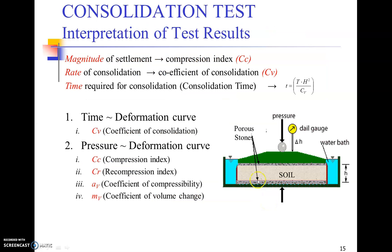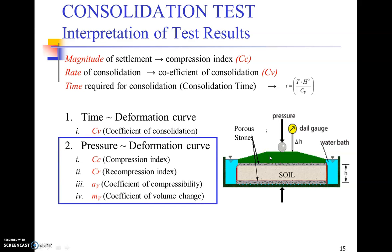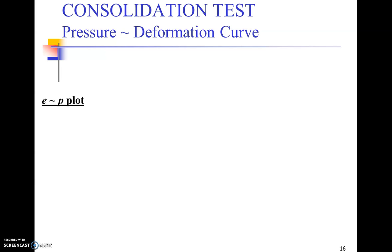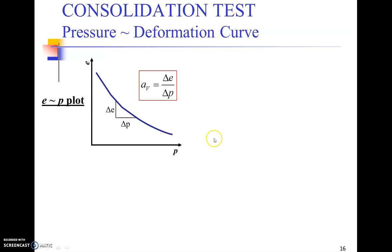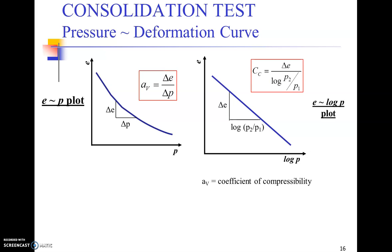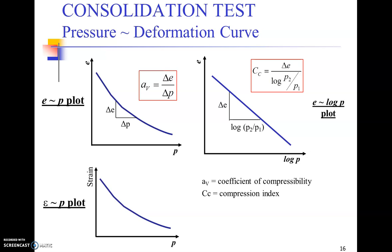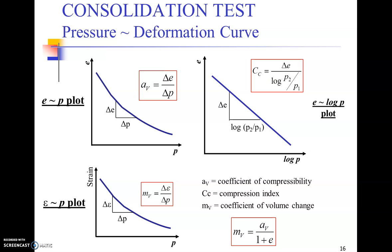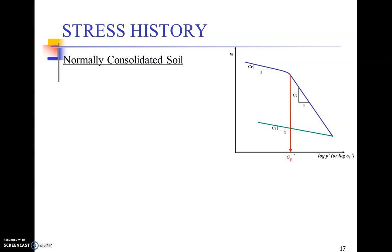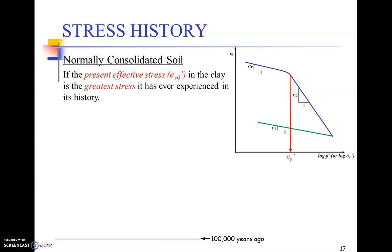We'll be focusing on Cc most of the time in geotechnical engineering 2 while solving numericals. These coefficients — Cc, Cv, and others — are determined through laboratory testing in a consolidation meter or oedometer, as seen in the setup here. Certain plots are produced: the e versus p plot gives the coefficient of compressibility, Av; the e versus log p plot yields the compression index, Cc; and the strain versus load plot gives the coefficient of volume change, Mv. Mv and Av may be correlated through void ratio.